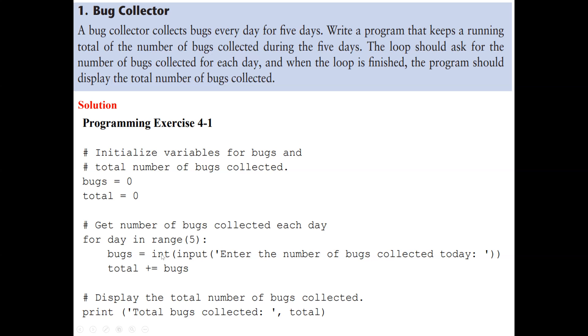Now, if it's a decimal number, we can convert it to float. But here, we are counting number of bugs, so it should be a whole number. So it's INT. Then we say total equal to total plus bugs. So here, we are using a compound operator. When we say total plus equal bugs, it means we are going to add the bugs into the total.